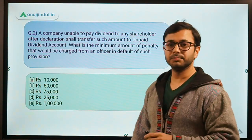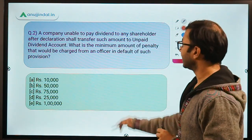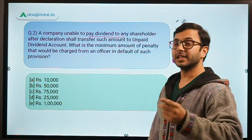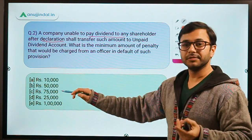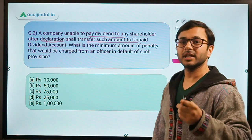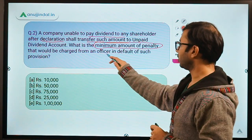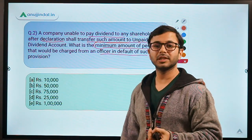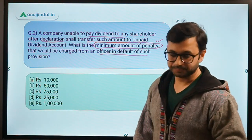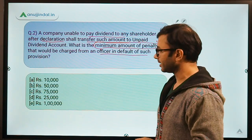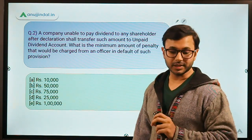Second question: a company unable to pay dividend to any shareholder after declaration — so the company has already declared a dividend but is unable to pay it — has to transfer such dividend to an unpaid dividend account. What is the minimum amount of penalty that would be charged from an officer in default of such provision, i.e., if the company has not transferred that money to the unpaid dividend account? The options are 10,000, 50,000, 75,000, 25,000 and 1 lakh. The answer is D — rupees 25,000. That is the minimum amount of penalty.